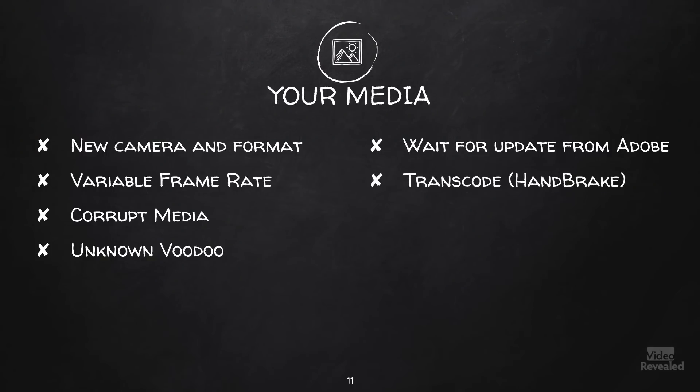Variable frame rates: transcode. Handbrake is a good one — it's a free application that can read a lot of formats and spit out a lot of formats. If you have some kind of problematic format, just output a new version of that clip or clips and Premiere Pro will like them better.